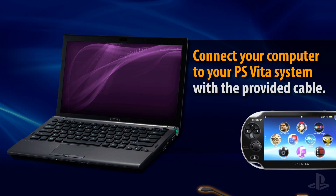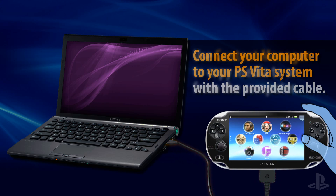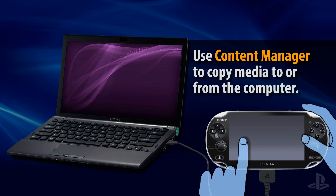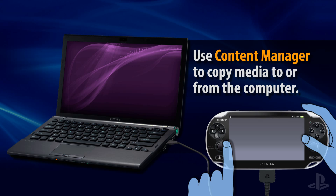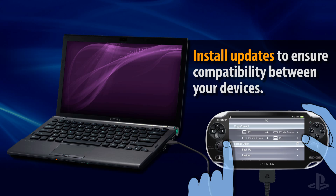Connect the PS Vita system to your computer using the provided USB cable. Tap the Content Manager icon on the home screen and then tap Start to launch the application. The rest of the content management process looks like what you've seen so far, except the screen options will show PC instead of a PlayStation 3 system. Be sure to accept and install any updates for Content Manager Assistant, as this will help ensure compatibility between your devices. And that's how you can use Content Manager for a PS Vita system.